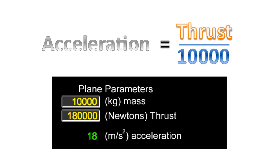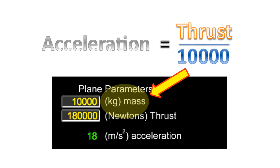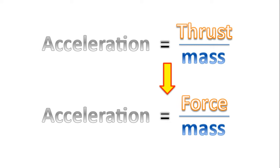Going back to our simulation — you can rewind the video if you wish — the mass was 10,000 kilograms. Is there a connection between that 10,000 and the 10,000 in the equation? There is. The more general formula for acceleration is that it's equal to thrust over mass for this specific simulation.